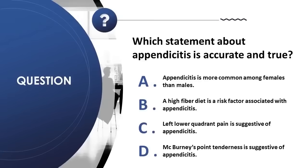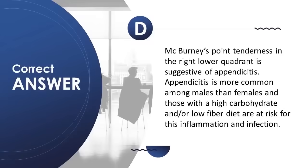Question 17: Which statement about appendicitis is accurate? A) more common among females than males; B) high fiber diet is a risk factor; C) left lower quadrant pain is suggestive; D) McBurney's point tenderness is suggestive. Correct answer is D. McBurney's point tenderness in the right lower quadrant is suggestive of appendicitis. Appendicitis is more common among males, and those with a high carbohydrate and/or low fiber diet are at risk.